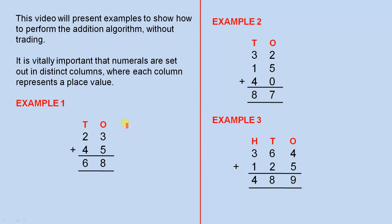Let's look at the simple example one. Here we have the ones column and the tens column. So we have 23 plus 45. Add the numbers in the ones column to give you 8, add the numbers in the tens column to give you 6. The answer is 68.